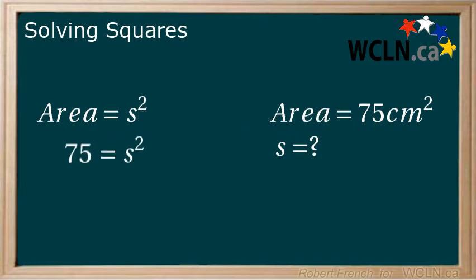Now, when solving for a variable, and in this case s, we want to isolate it so that we can have s equals some number. How do we isolate the s though when it has an exponent of 2?